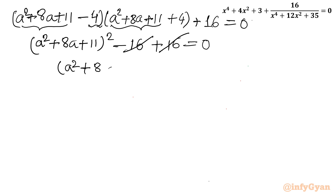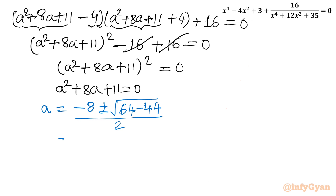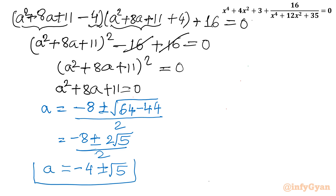Therefore (a² + 8a + 11)² = 0, which means a² + 8a + 11 = 0. Applying the quadratic formula: a = (−8 ± √(64 − 44)) / 2 = (−8 ± √20) / 2. Since √20 = 2√5, this simplifies to a = −4 ± √5. This is our final value for a.